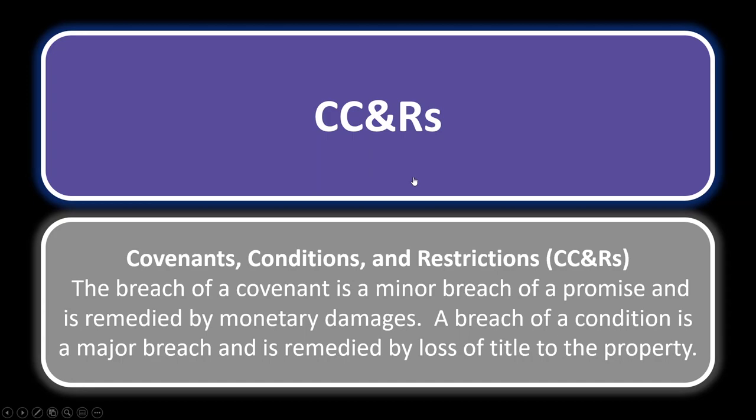Because breaching a condition is very serious, the condition needs to be in the deed. A restriction is a private deed restriction that restricts the use of the property, and an injunction — a court action to stop an activity or force compliance — is used to enforce private deed restrictions. So: covenant equals minor breach, usually just a fine; condition means you could lose title, major breach; restriction uses an injunction to force compliance.